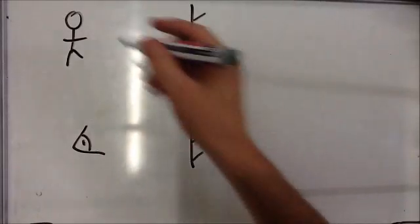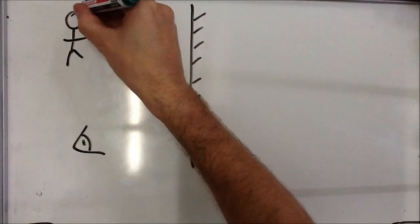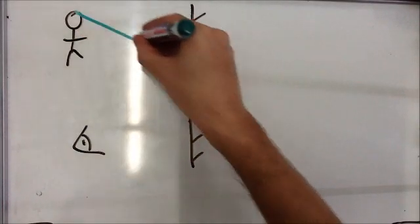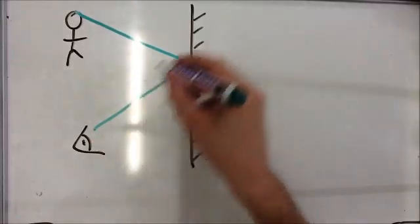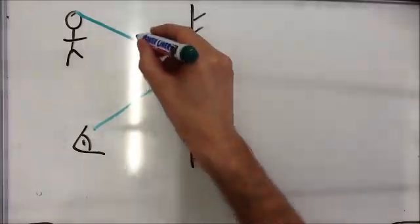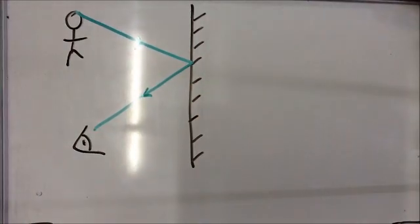Well, how do they see them? What happens is light from the person's head here travels down, hits the mirror according to the laws of reflection. Remember, this angle must be the same as this angle here. We always draw our arrows on, and that's what happens.